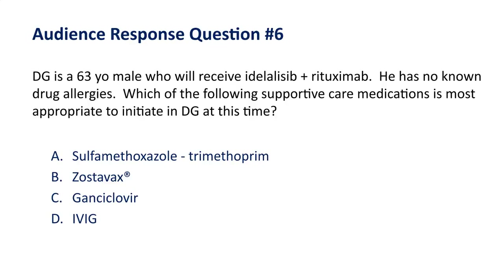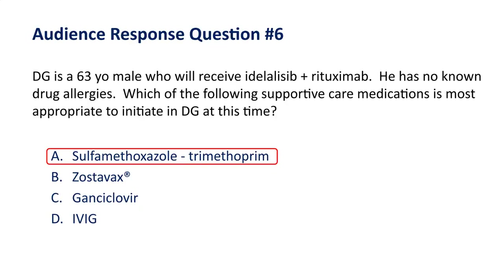Audience response question six, about patient two who will receive idelalisib plus rituximab: which supportive care medication is most appropriate to initiate? A) sulfamethoxazole-trimethoprim, B) Zostavax, C) ganciclovir, or D) IVIG? The most appropriate answer is A — sulfamethoxazole-trimethoprim — because idelalisib is associated with an incidence of pneumocystis, making this appropriate prophylaxis. The patient is not a candidate for the other therapies listed based on the information provided.